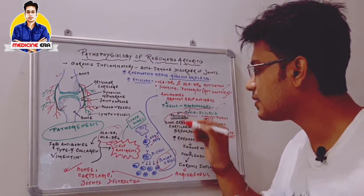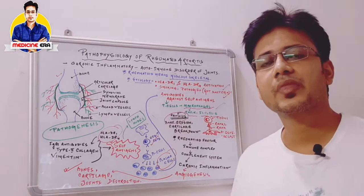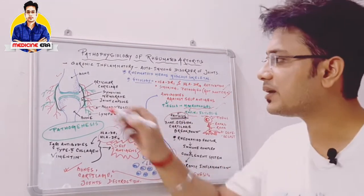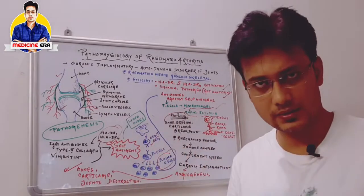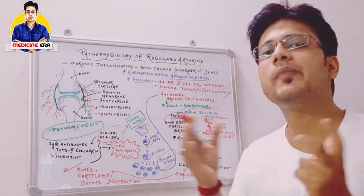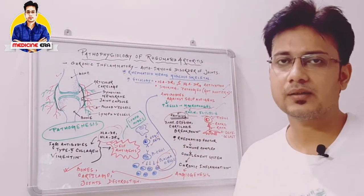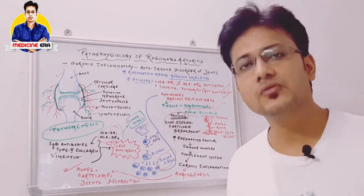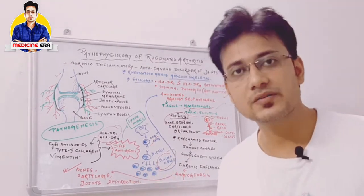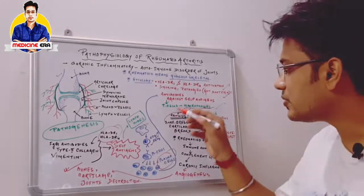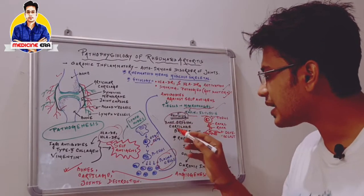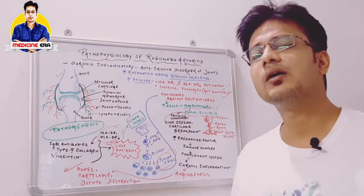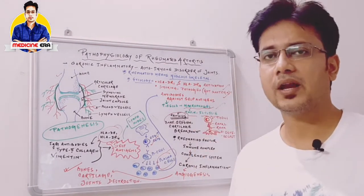These inflammatory molecules are responsible for the formation of pannus. Pannus is an inflamed or swollen synovial membrane of the joint. Due to the formation of pannus, the joint becomes inflamed, persisting inflammation that is very painful. Due to pannus formation, bone erosion and cartilage breakdown also happen, making pannus formation an important phenomenon in rheumatoid arthritis.